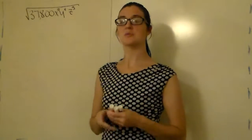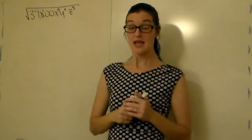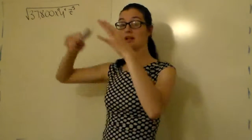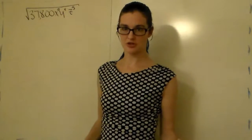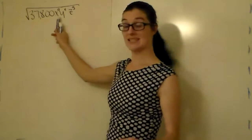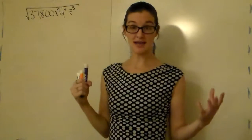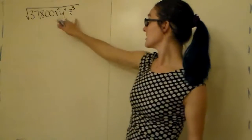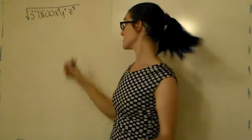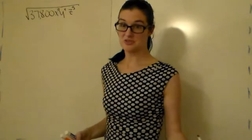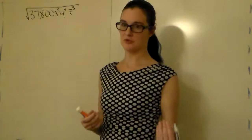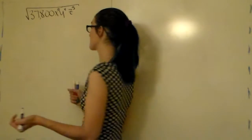The first thing we're going to do is take the radicand and break it into prime factors. We want to take the 37,800 and break it up into all numbers that cannot break up further. We'll also break up x to the ninth, y to the fourth, and z to the fifth. There are different ways to do this — this is just my favorite way. It is by no means the only way to simplify radicals. I'm going to start with a factor tree.